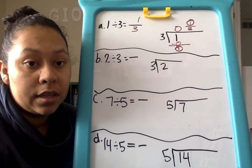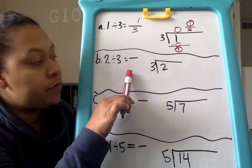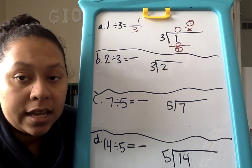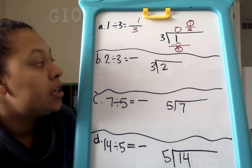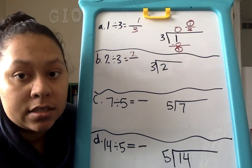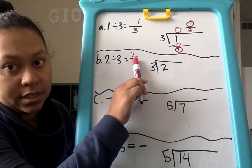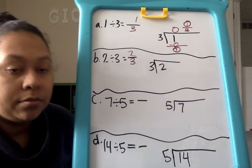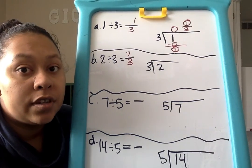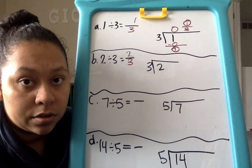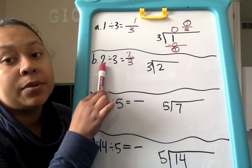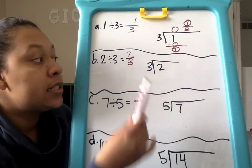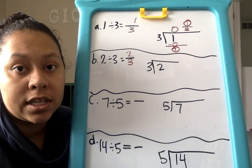Now let's try B. So B says 2 divided by 3. If we were to have 2 candy bars divided into 3 friends, how much would each friend get? Let's write it as a fraction first. We have 2 candy bars — 2 is the amount of pieces. Division sign becomes fraction sign, divided into thirds, into 3 equal parts. So 2 thirds. Each friend would get 2 thirds of a candy bar, which is almost a whole because it's almost 3 thirds. But it's not exactly 1 whole — if we had 3 divided by 3 we would have 1 whole, but we have 2 divided by 3.